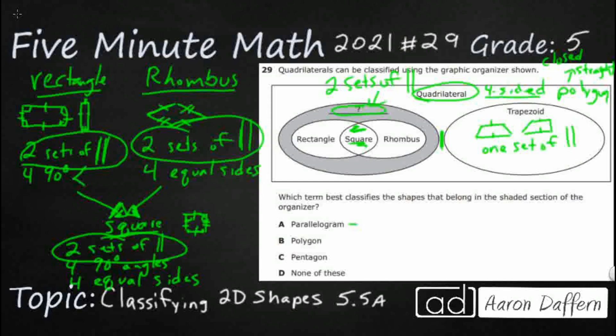So, parallelogram. What is a parallelogram? Parallelogram is a quadrilateral—that's good—with two sets of parallel lines. So that's really what we're looking for. Polygon is that outer circle—it's got the closed and the straight, but trapezoids are also polygons. Pentagon? Nope, that's a five-sided shape. If we get stuck, we could say D, but that is incorrect. Our answer here is A, parallelogram.